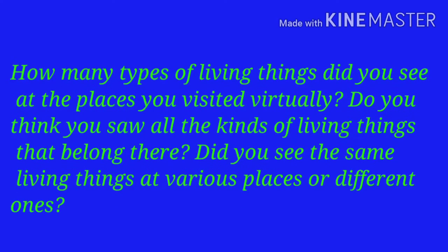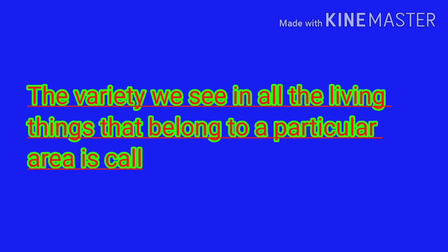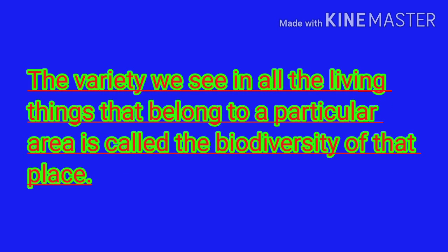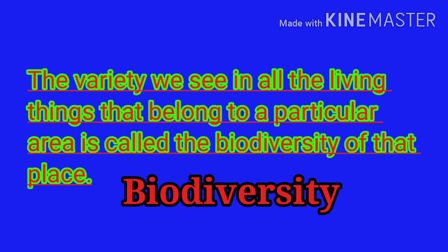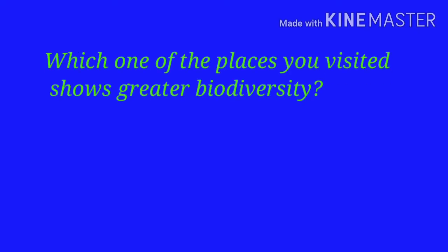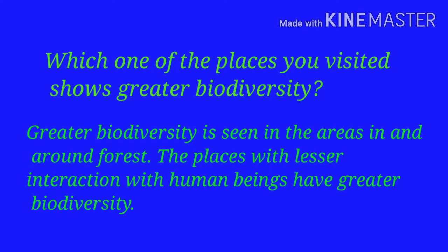How many types of living things did you see at the places you visited virtually? Do you think you saw all the kinds of living things that belong there? Did you see the same living things at various places or different ones? The variety we see in all the living things that belong to a particular area is called the biodiversity of that place. Which one of the places you visited shows greater biodiversity? Greater biodiversity is seen in the areas in and around forest.